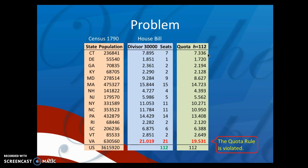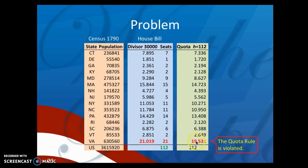There is a problem. Looking at the quota, the quota rule says Virginia should get 19.5 representatives according to their fair share — so Virginia should get either 19 or 20, the two nearest whole numbers. But using the House divisor method, Virginia ended up with 21 representatives — more representation than their fair share.